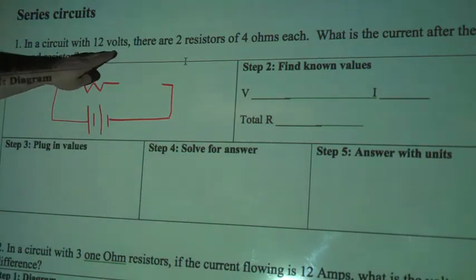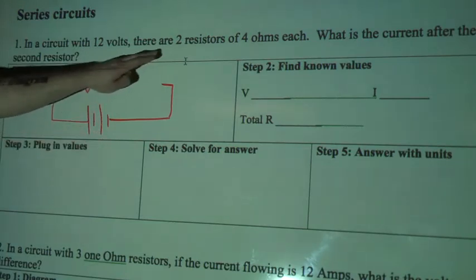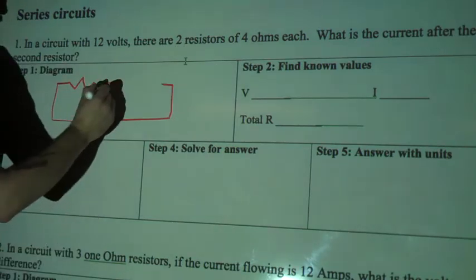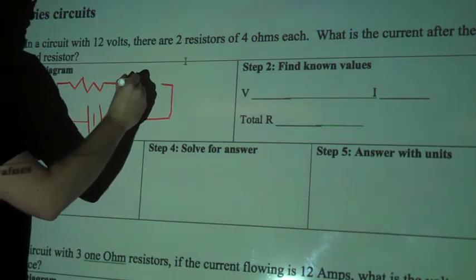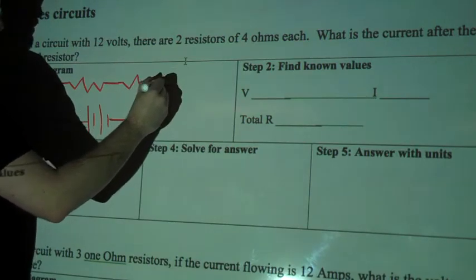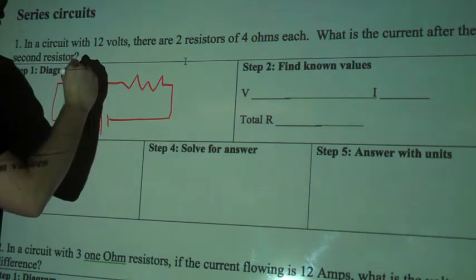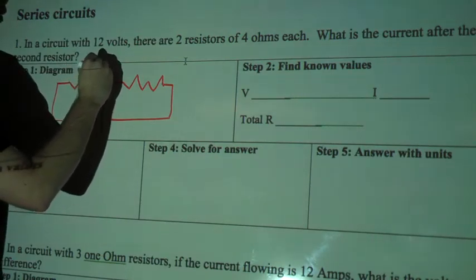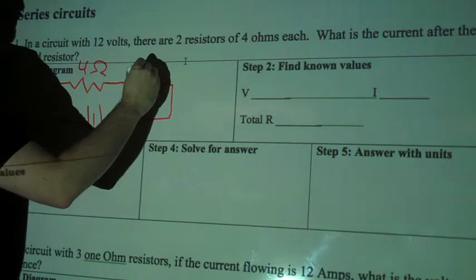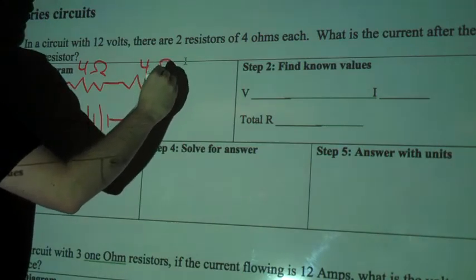On this one we have 12 volts, that's the battery, and there are two resistors. I'm going to draw two of these squiggly lines. They're each 4 ohms, so I'm going to label this on here too. This is 4 omega, this is 4 omega.